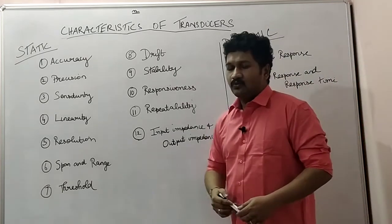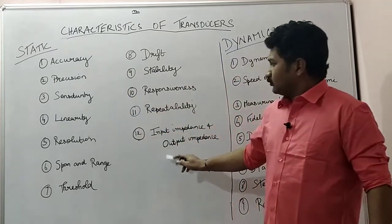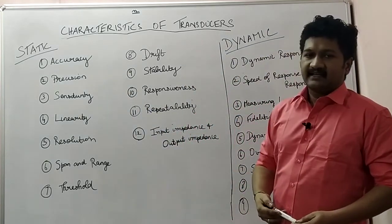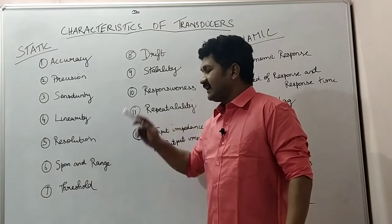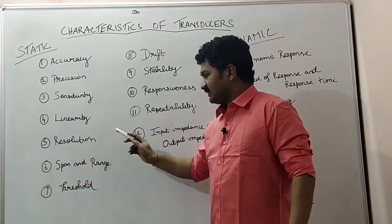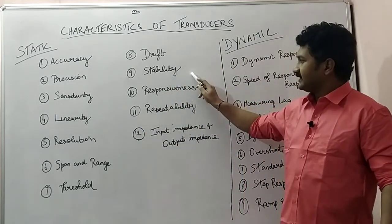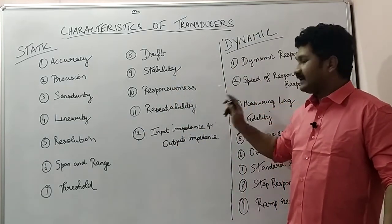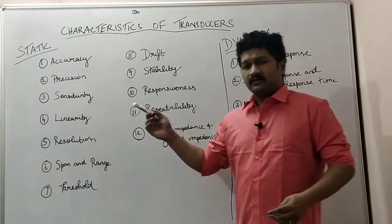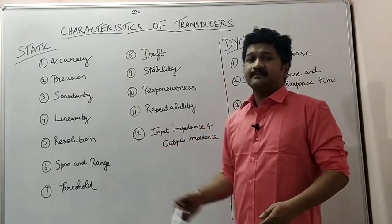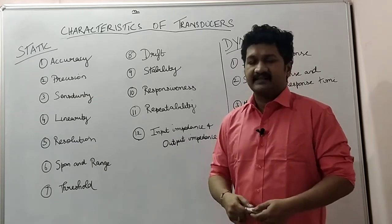When we look at static characteristics, there are 12 most important static characteristics. They are: accuracy, precision, sensitivity, linearity, resolution, span and range, threshold, drift, stability, responsiveness, repeatability, and input impedance and output impedance. These are some of the most important static characteristics which govern the working of a transducer.